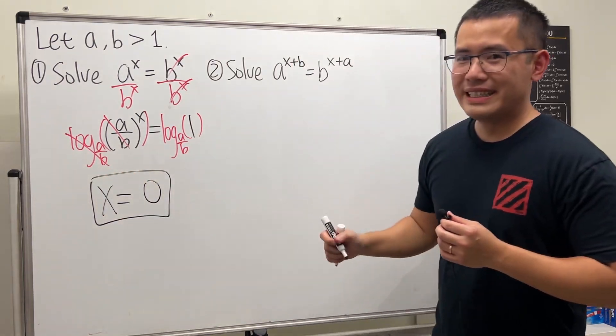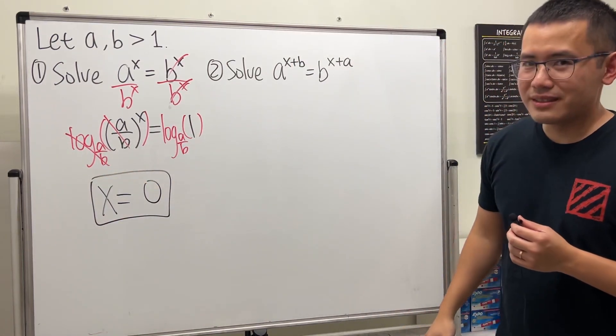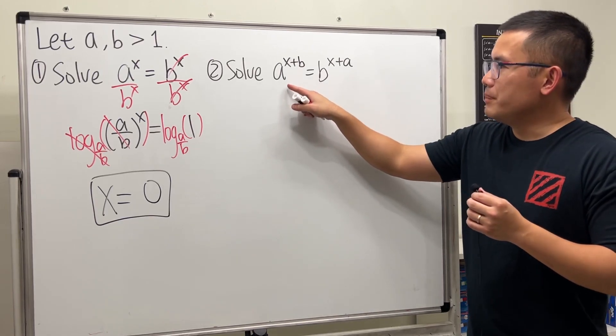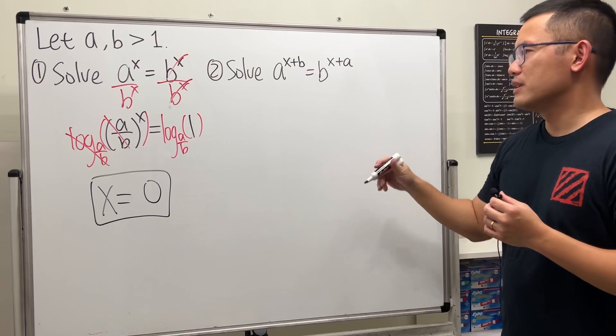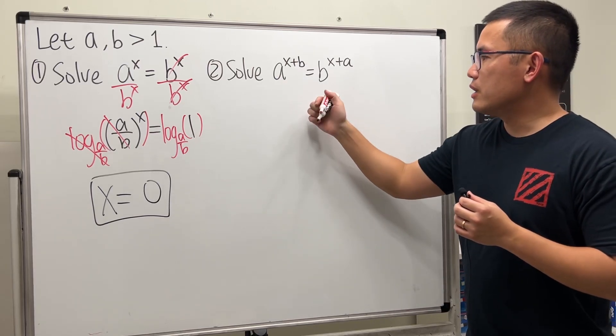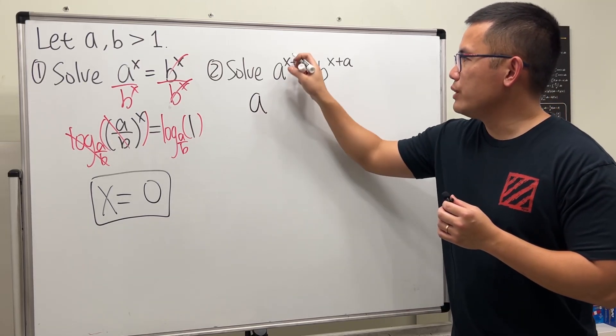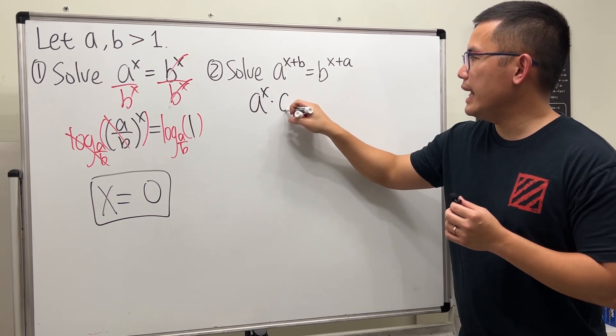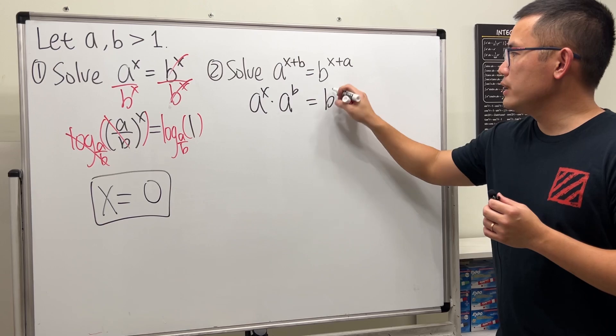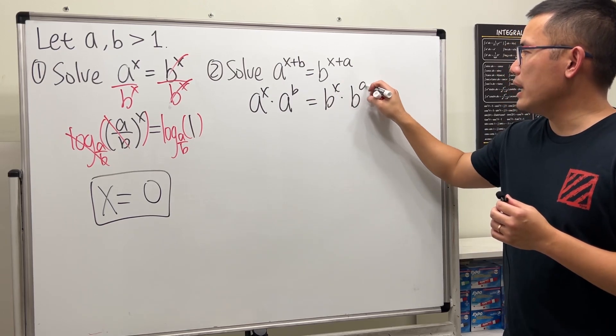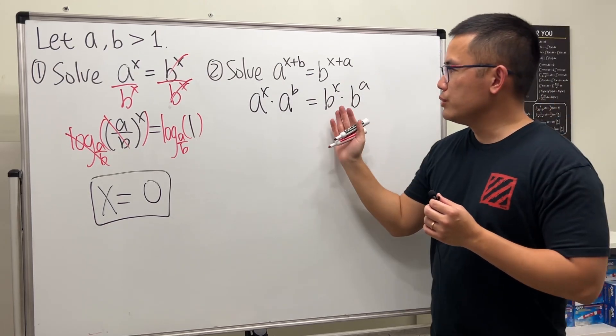Now this right here is a little more interesting. Before I take log, let me just use rule of exponents to simplify this a little bit. We can have a^x times a^b here, and we get b^x times b^a.